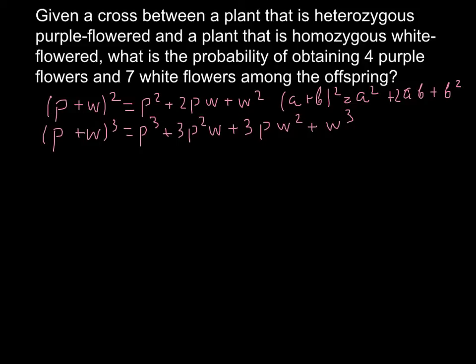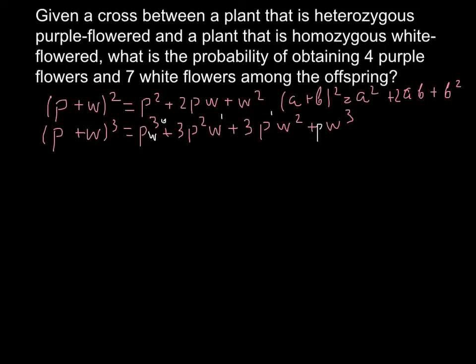If you see the pattern: in the first term we have P³; in the second, P²; in the third, P¹; and then P disappears. Correspondingly, W starts at W⁰, then W¹, then W², then W³. So P's exponent decreases and W's exponent increases with each term.